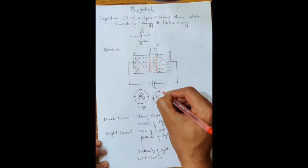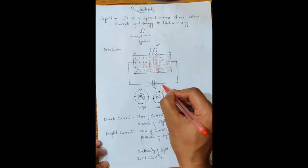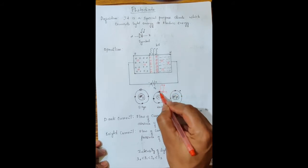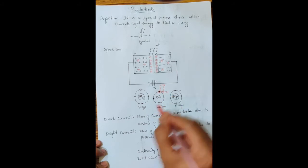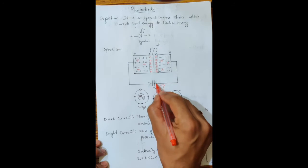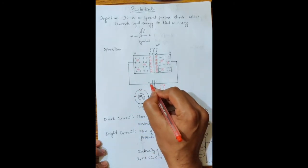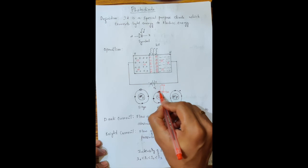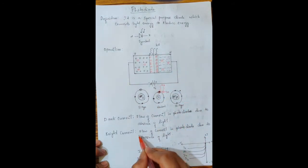Once light is illuminated on the neutral atoms, the electrons present at the outermost shell of the silicon atoms get sufficient energy from the light and are ejected. Once the electron is ejected it creates a hole. The ejected electrons start moving towards the positive terminal of the battery, and the holes created inside the depletion region start moving towards the negative terminal due to attractive force. These additional charge carriers contribute to the flow of current, which is called bright current — because it is caused by the presence of light.